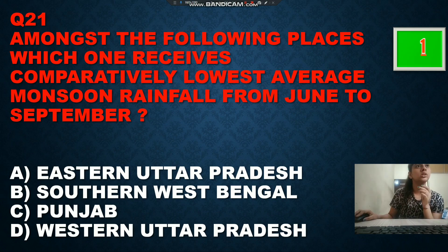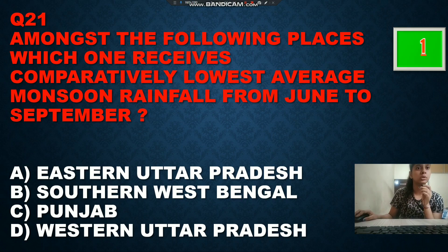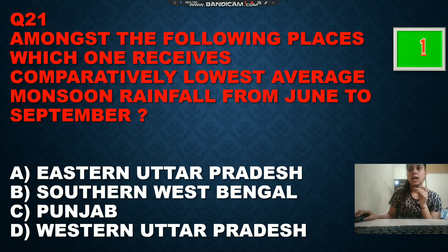Our next question: amongst the following places, which one receives the comparatively lowest average monsoon rainfall from June to September? Option A is eastern Uttar Pradesh, option B is southern West Bengal, option C is Punjab, and option D is western Uttar Pradesh. The correct answer is western Uttar Pradesh.